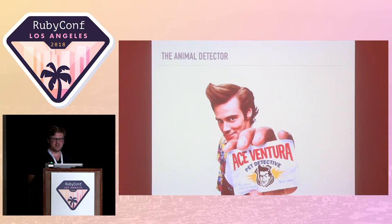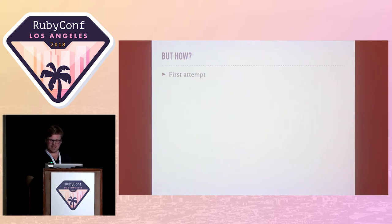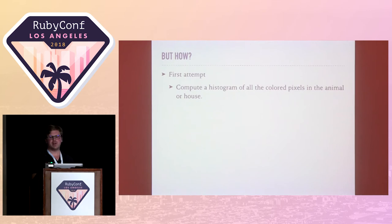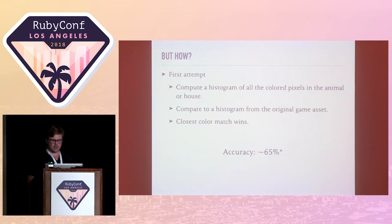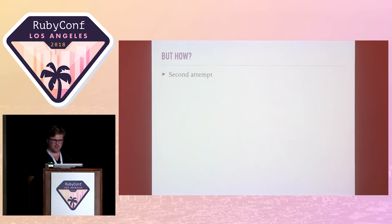This is where the animal detector comes in. My first attempt was naive since I'm not a computer vision expert. I computed a histogram of all the colored pixels in the animal or house — stripping away gray pixels — and then compared it to a histogram of the original game asset. A histogram just means the frequency of each color in the image. The closest match wins. The accuracy of this approach was about 65% — it got things wrong all the time — and only worked reasonably for levels 1 through 12. For anything higher it really messed up.